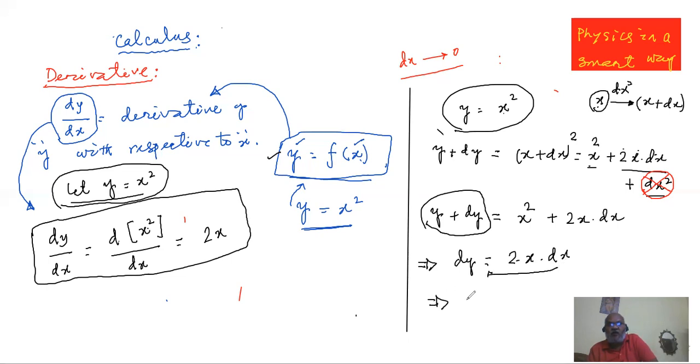If I bring this dx to the left hand side, then that answers us that dy/dx = 2X. And that establishes our formula that we'll be taking up in derivative. That derivative of Y with respect to X when Y = X², and derivative of X² with respect to dx will be equal to 2X. We establish that using our ideas, school level ideas, small mathematics that you know.